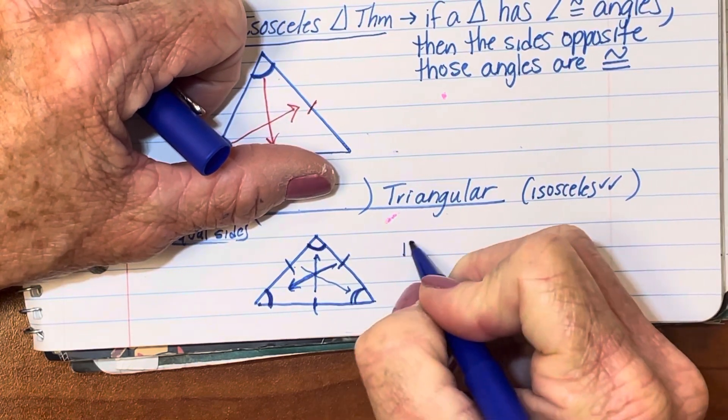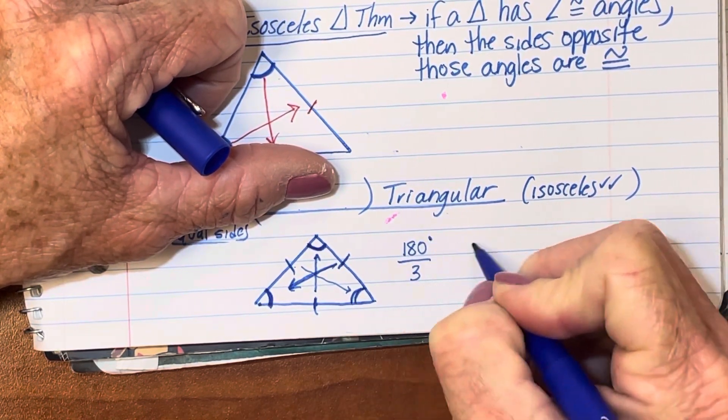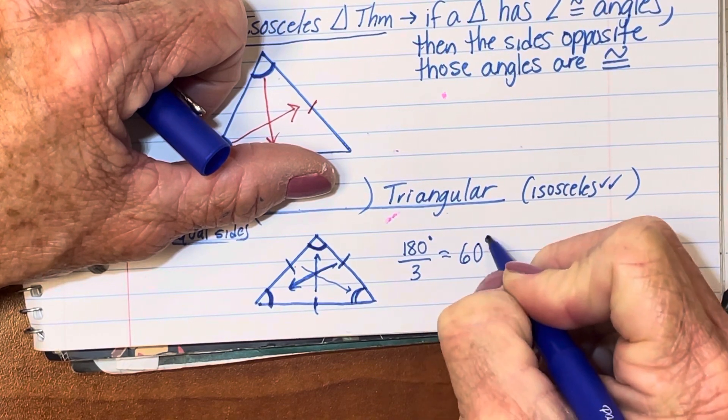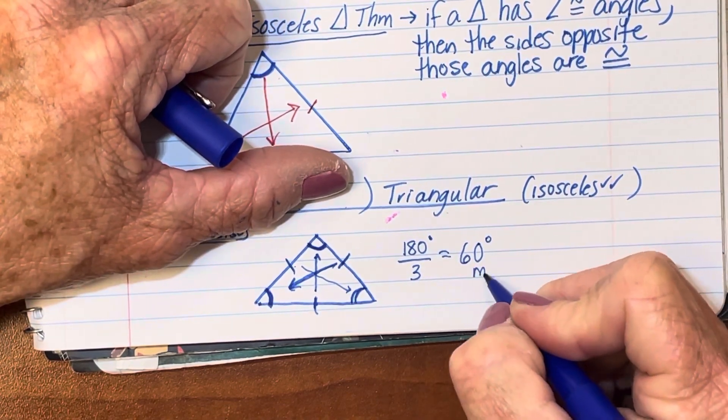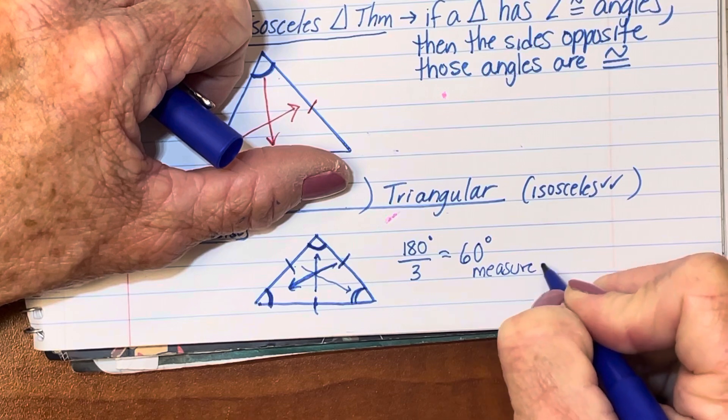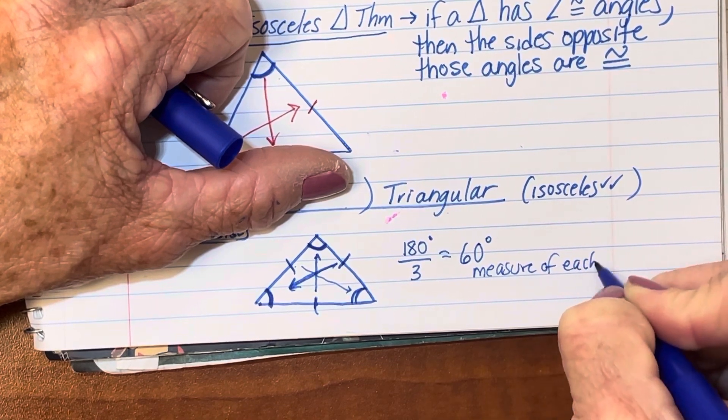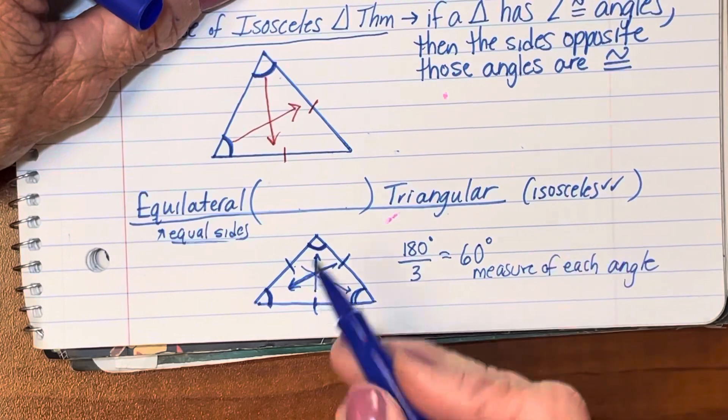So we have three angles in a triangle, and we know that all three of them add up to 180. So 60 degrees will be the measure of each angle.